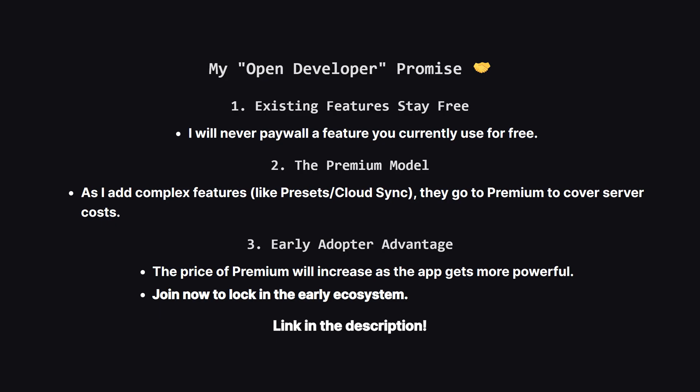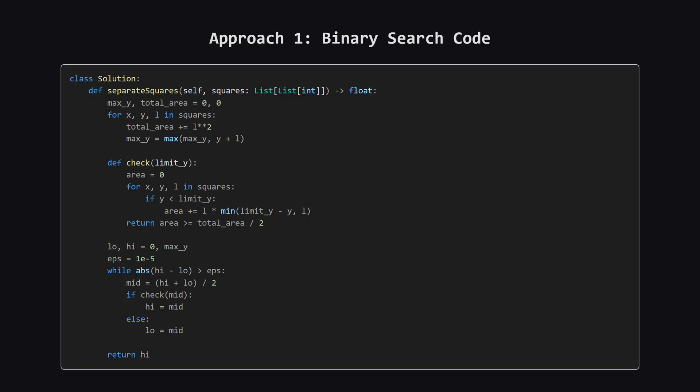Okay, now let's see what this looks like as actual code. I'll put the full solution on the screen first, and then we'll walk through the most important sections together. Here is the full Python code for the binary search approach — it's quite clean. We calculate the total area first, then set up a binary search loop that calls a helper function to check our guesses.